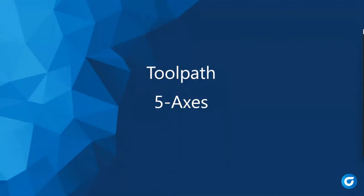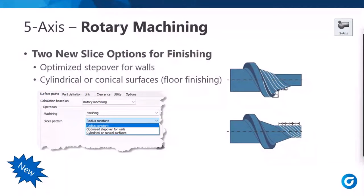We're nearing the end, so here are some five-axis improvements. For rotary machining, there are new slice options for finishing: optimize step over for walls — with more options for better wall-specific tool paths — and for floor finishing, either cylindrical or conical, where you can specify a conical angle. A five-axis machine is required for the conical option. For example, finishing a conical portion of a feed screw using the fifth axis locked in position.